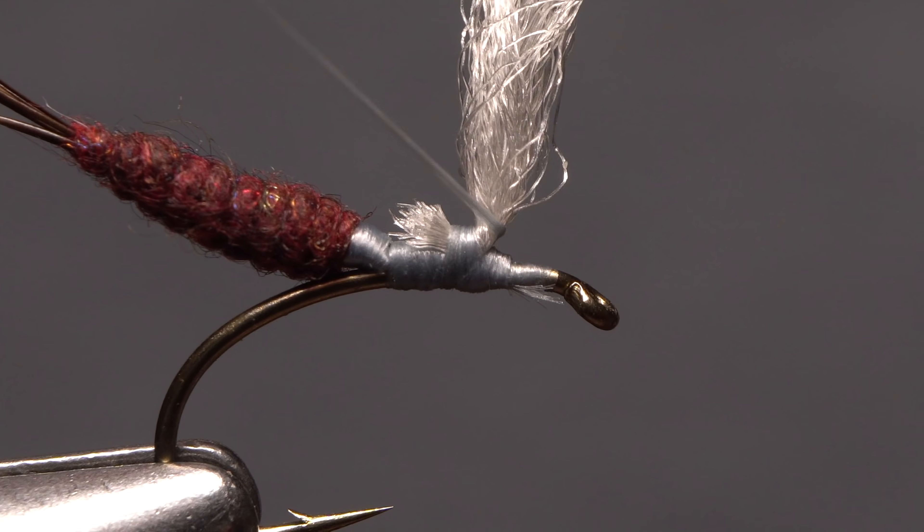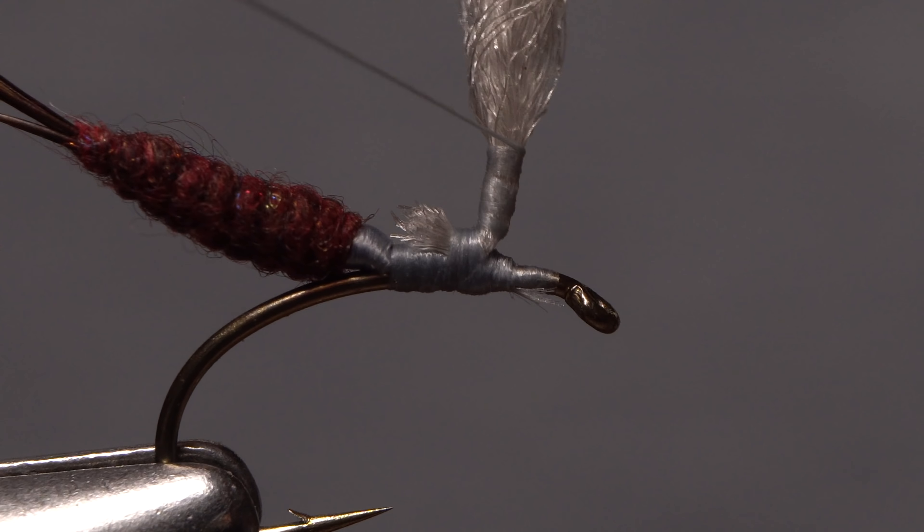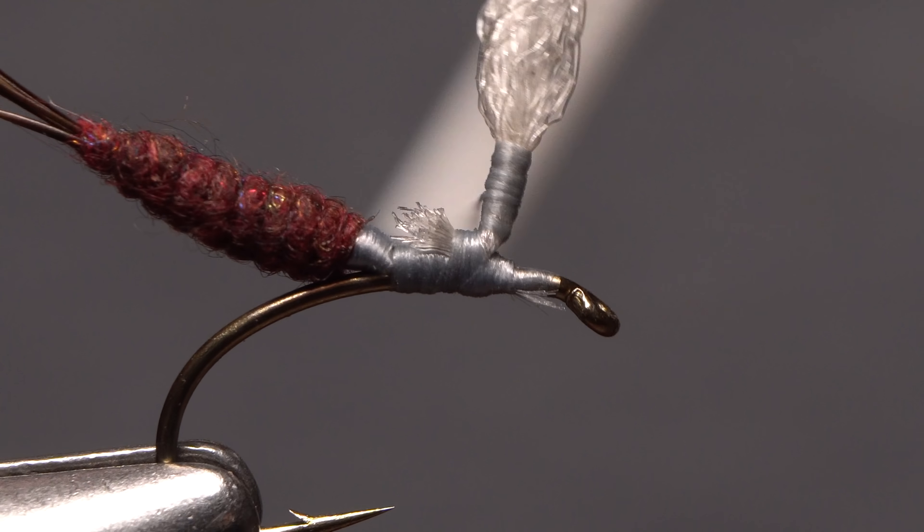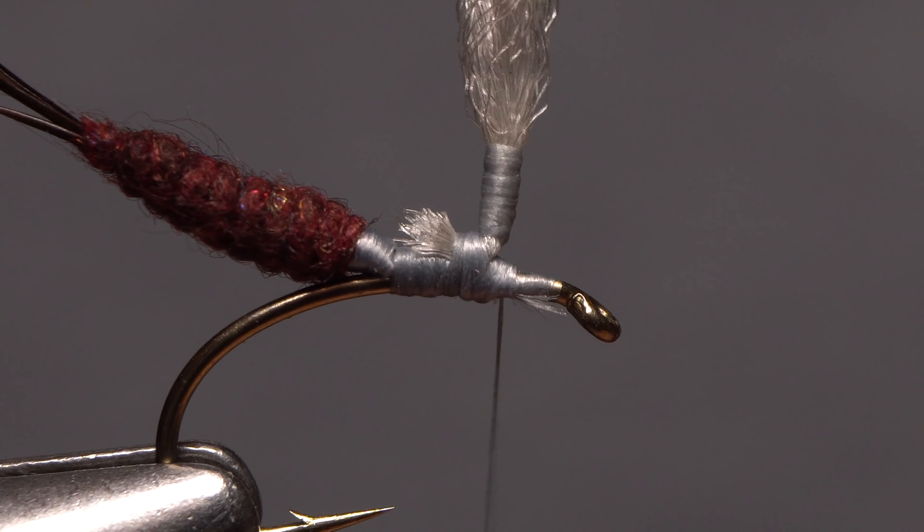Pull the post back and jam a few wraps underneath it to hold it up. Then, start taking posting wraps up the material. When your post is about a quarter inch tall, begin taking thread wraps back down. End with your tying thread on the hook shank immediately in front of the post.